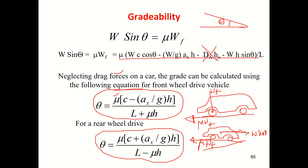Interpreting these two equations: for FWD, the denominator contains L + μh (with a positive sign from μh), which makes theta smaller. For RWD, it has a minus sign in the denominator, so it increases theta — RWD achieves a larger maximum gradient angle.